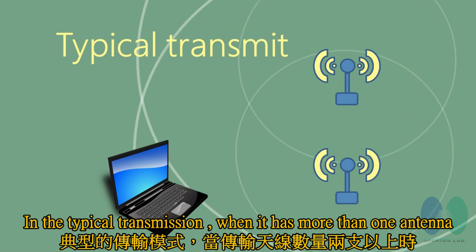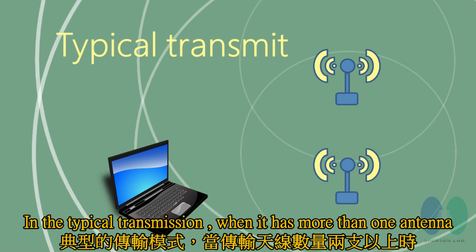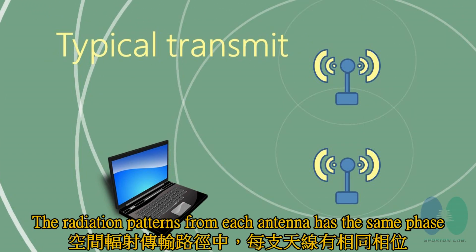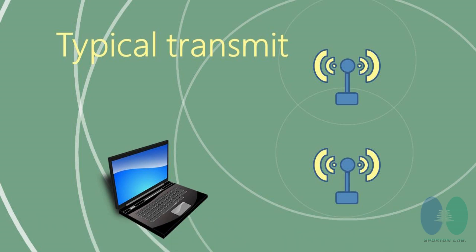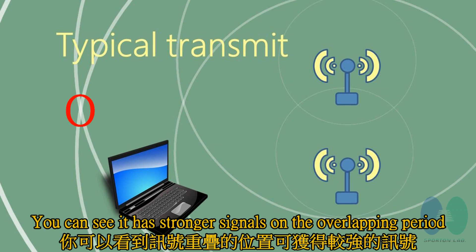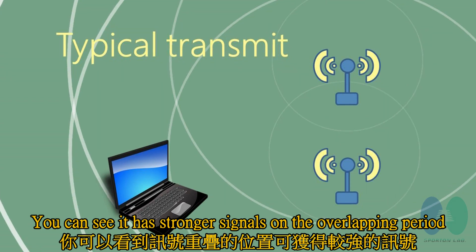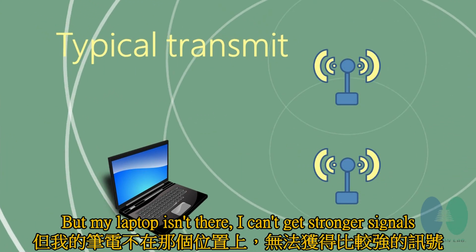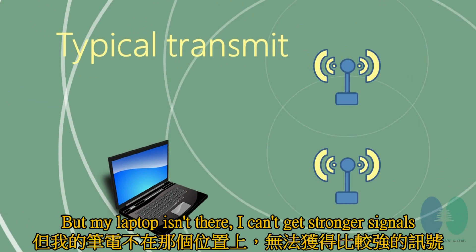In the typical transmission, when it has more than one antenna, the radiation pattern from each antenna has the same phase. You can see it has stronger signals on the overlapping period. But my laptop isn't there, so I can't get stronger signals.